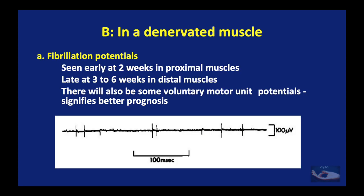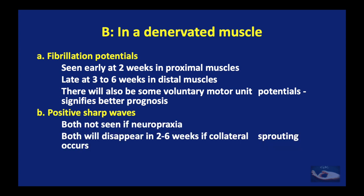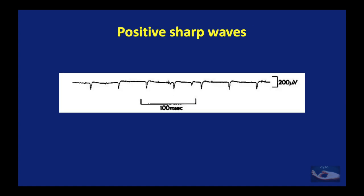In a denervated muscle, there are three types of electrical activity noticed. Fibrillation potentials are seen early — at two weeks in proximal muscles and about three to six weeks in distal muscles. There may also be some voluntary motor unit action potentials, which signify a better prognosis. In a denervated muscle, we also have positive sharp waves. Both fibrillation potentials and positive sharp waves are not seen if it is only a neuropraxia, and both will disappear in about two to six weeks if collateral sprouting occurs.